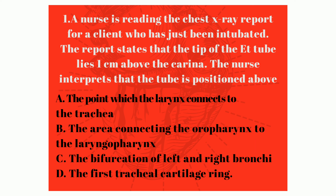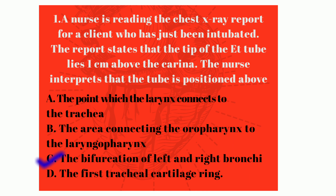Question number one: A nurse is reading the chest X-ray report for a client who has just been intubated. The report states that the tip of the ET tube lies one centimeter above the carina. The nurse interprets that the tube is positioned above: A) the point where the larynx connects to the trachea, B) the area connecting the oropharynx to the laryngopharynx, C) the bifurcation of left and right bronchi, or D) the first tracheal cartilage ring.